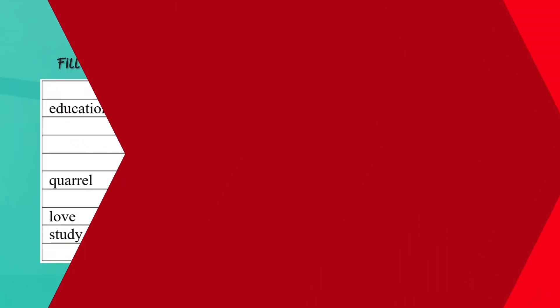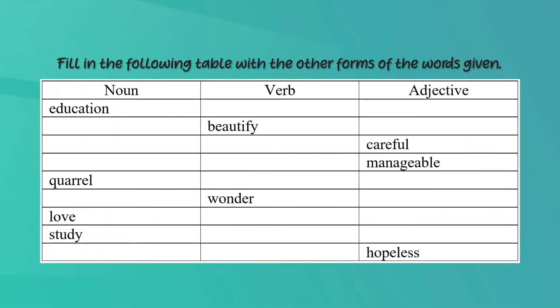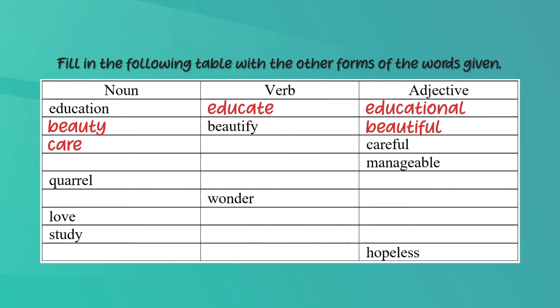Okay children, let's check whether you have done it correctly. Here is the completed table. First you have the noun 'education' — the verb is 'educate' and the adjective is 'educational'. In the next row you have the verb 'beautify' — the noun is 'beauty' and the adjective is 'beautiful'. Next you have the adjective 'careful' — the noun is 'care' and the verb is also 'care'.